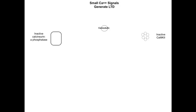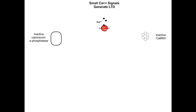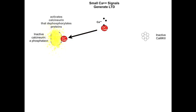The second protein is CAM kinase 2, which is shown on the right side of the slide. A small amount of calcium enters the cell through NMDA receptors, and that calcium binds to calmodulin. The activated calcium-calmodulin complex does two things. First, it activates calcineurin, the phosphatase, which then dephosphorylates other proteins.